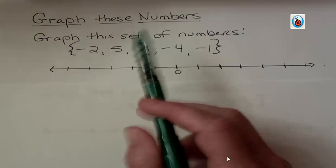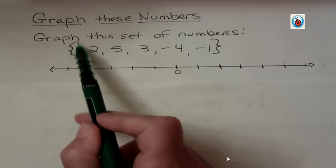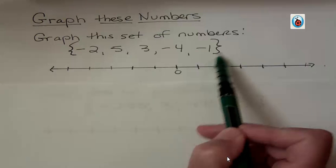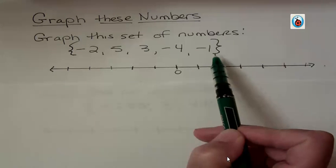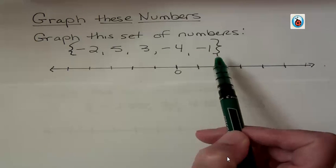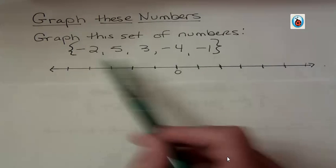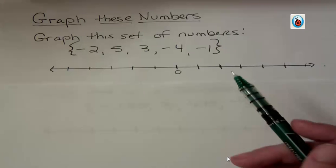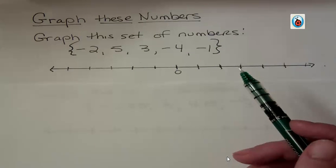This is a set of numbers. You see this symbol here at the end? That's set notation. That just means we have a set, and all that means is that we're considering these numbers all together — that makes them a set.